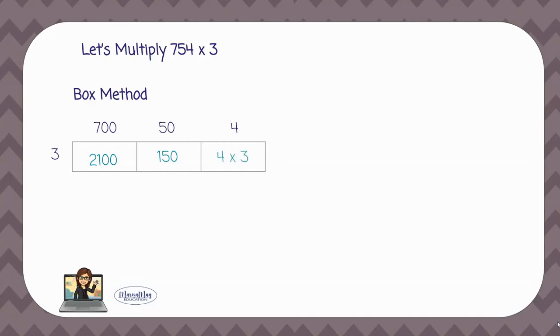Last box. 4 times 3 is going to give you 12. Now to get our answer for 754 we're going to add 2,100, 150, and 12.